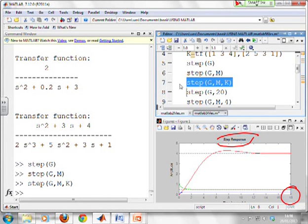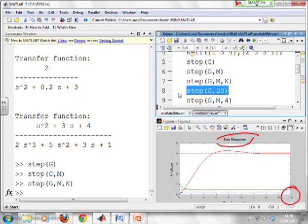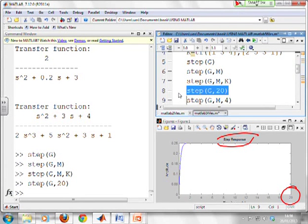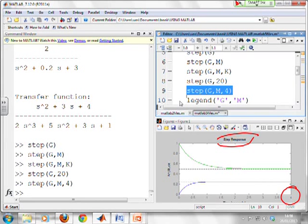What if I want to control the end time? So you'll see the next line, step(G,20). That will set the end time to be 20 and it will do only G. So you can see that's not a very wise end time for this particular transfer function. But the end time is set to 20 as you expect. Or I could do step(G,M,4), which will do G and M together and put an end time of 4. And there you go.